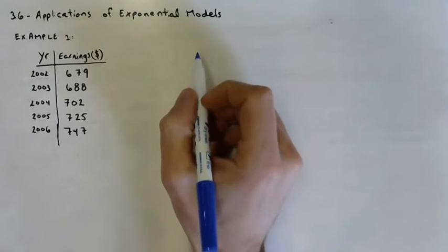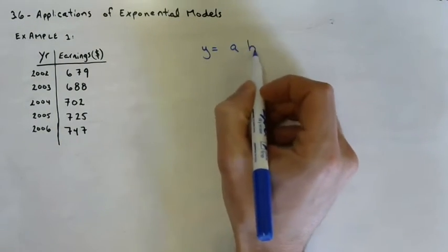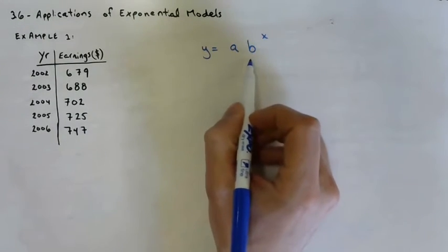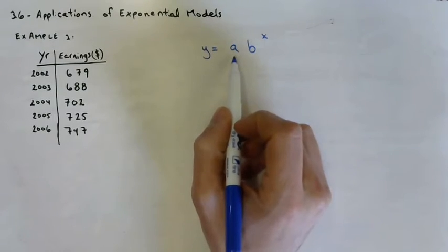So a couple of things that we need, first of all, is the base form of an exponential function. We have a base to an exponent, this is the power, and then we have an initial amount.